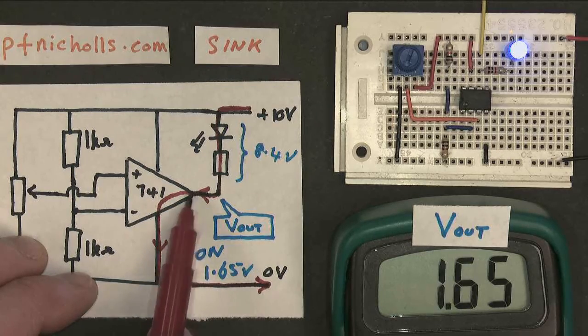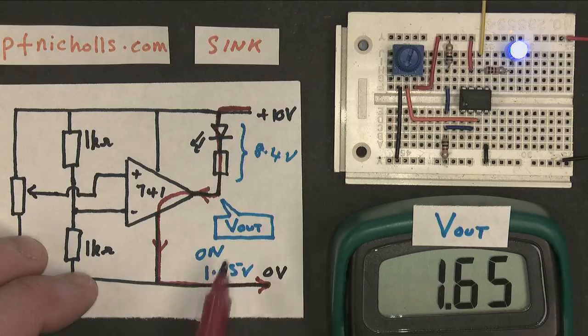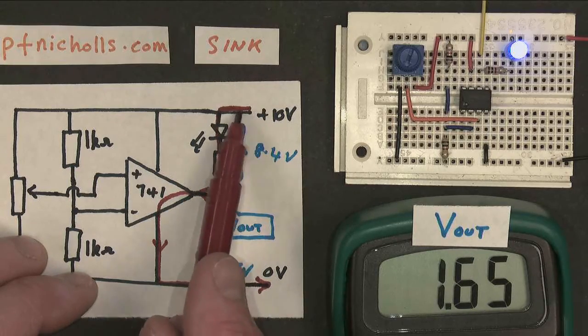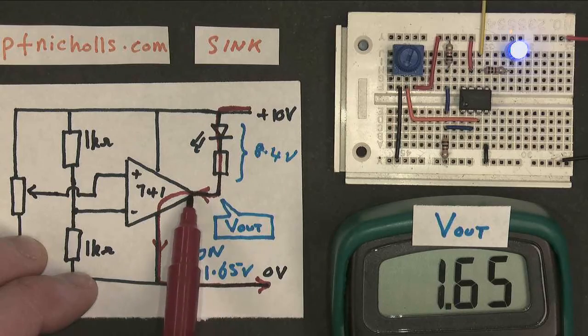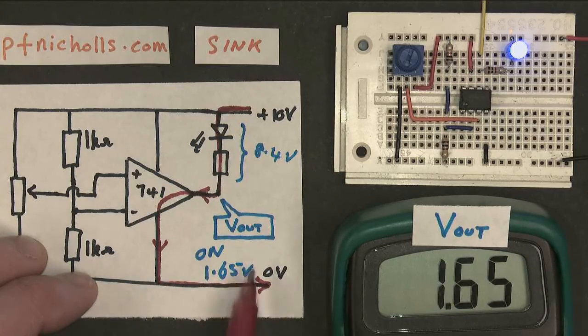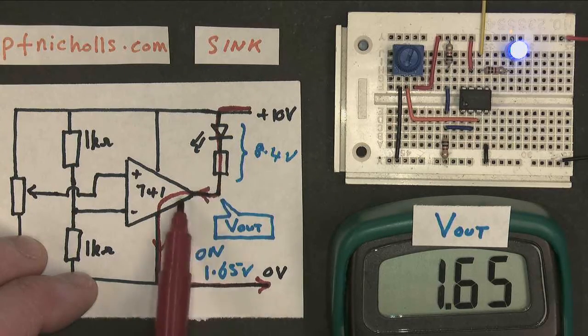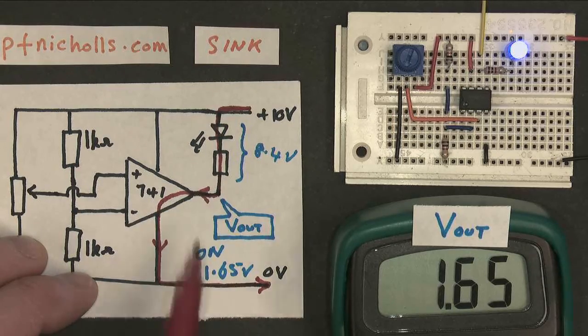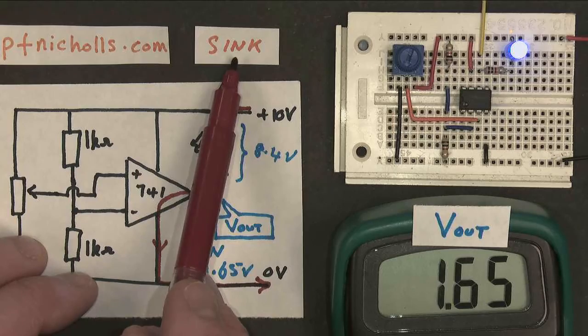So when the output voltage Vout is low, you get a potential difference across the LED. Current can flow from the positive power supply into the chip and down to ground. The LED lights up. The output here still controls the output device, but current's flowing in. That's what it means to have a current sink.